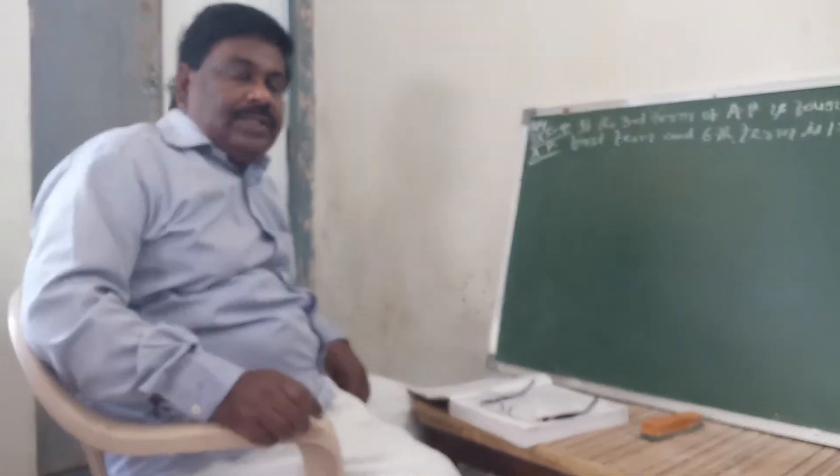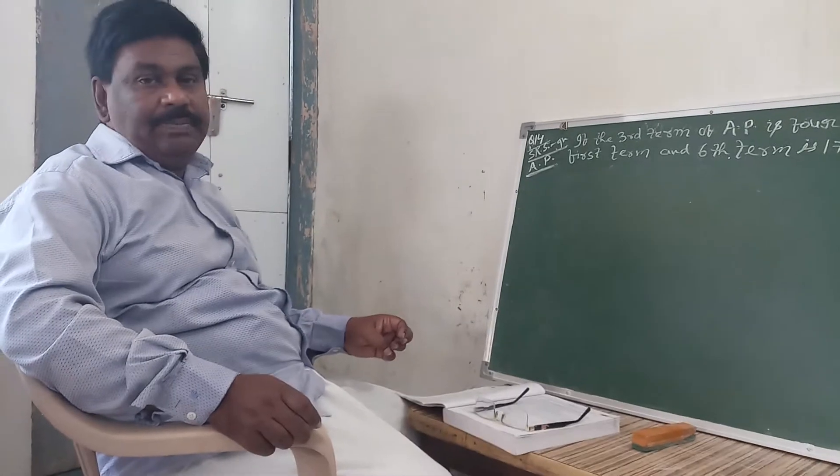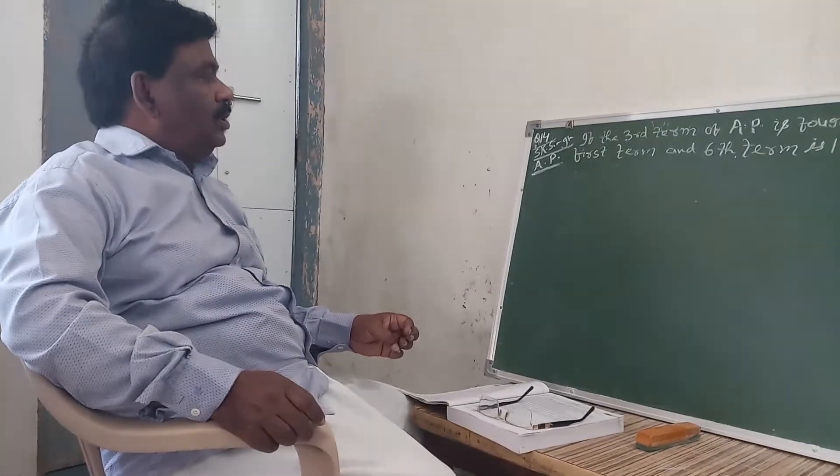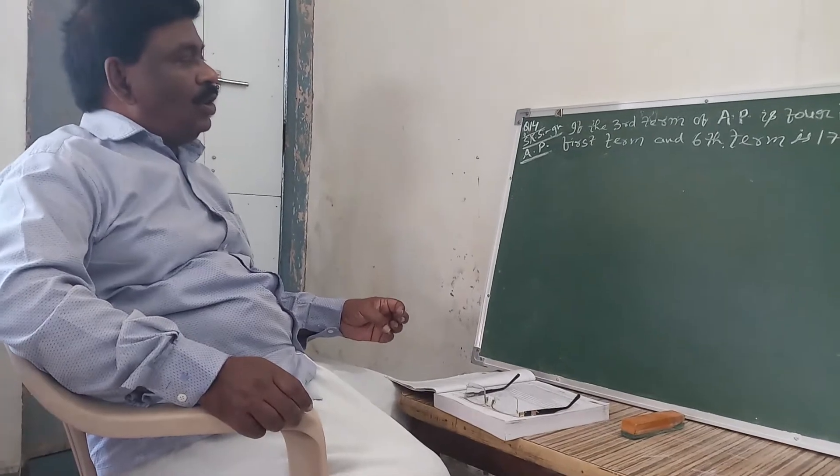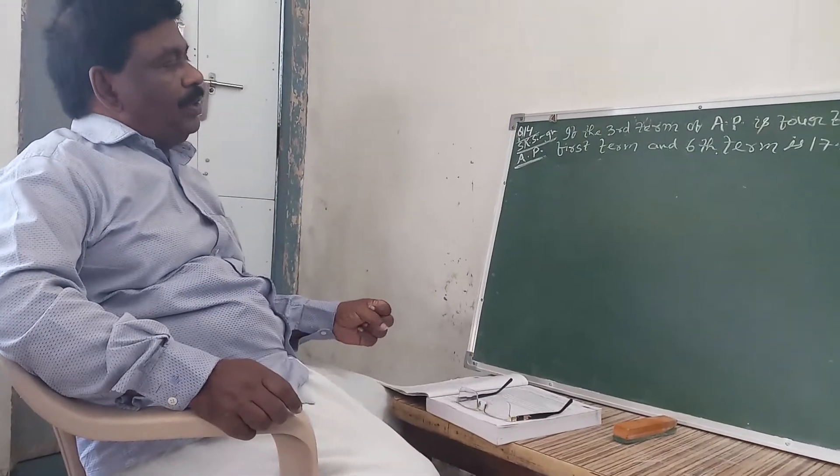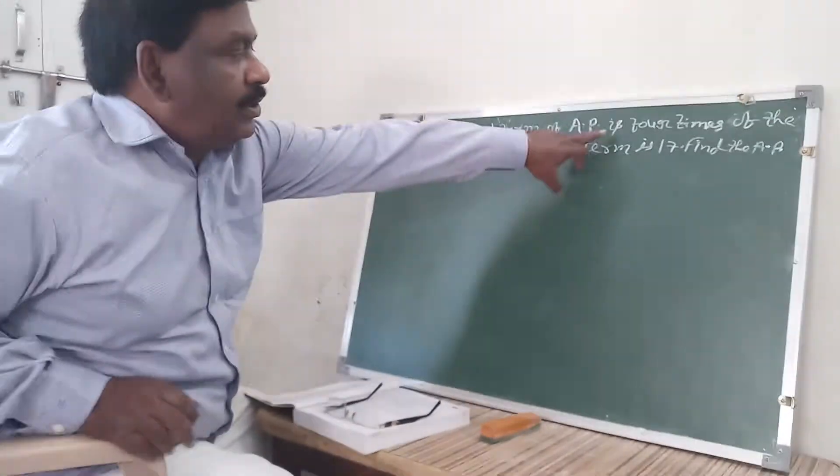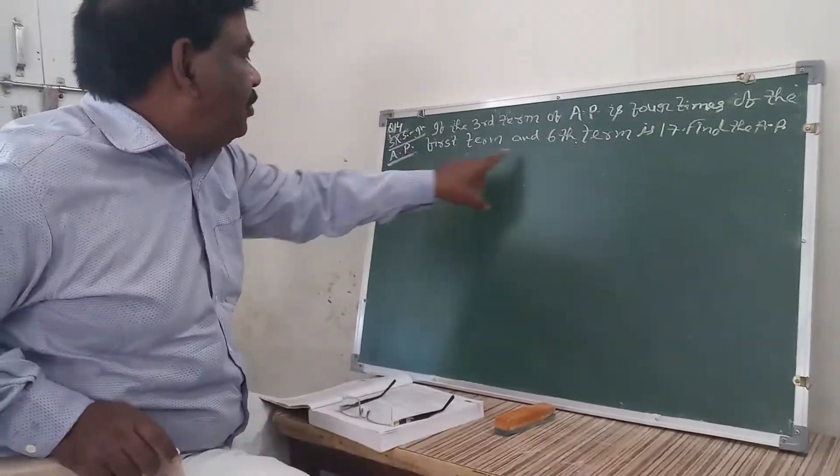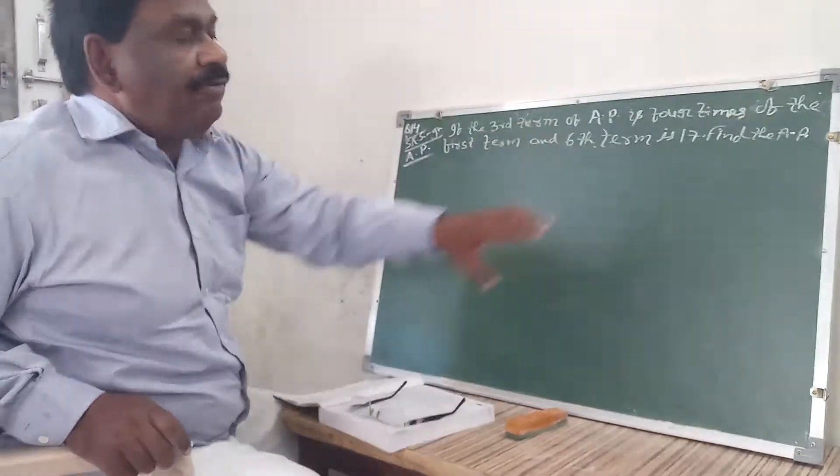Now we are starting or continuing arithmetic progression, assessing question number 14 of AP. If the third term of AP is 4 times the first term and the sixth term is 20, find the AP.